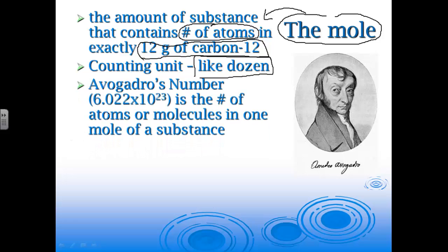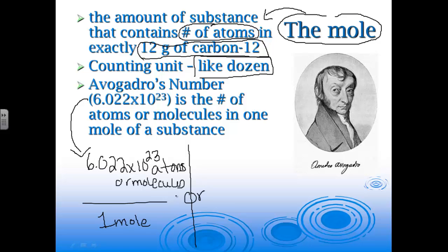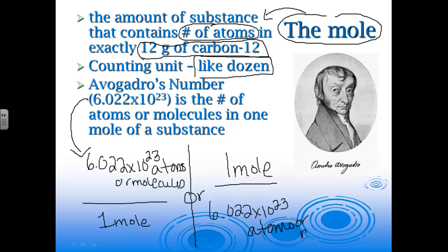It's called Avogadro's number, and it is 6.022 times 10 to the 23rd. It's the number of atoms or molecules in one mole of a substance. We can use Avogadro's number as a conversion factor. The first option is 6.022 times 10 to the 23rd atoms or molecules per one mole. The other option, if you flip it over, is one mole over 6.022 times 10 to the 23rd atoms or molecules.